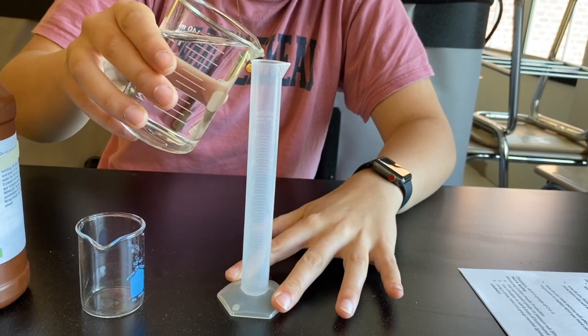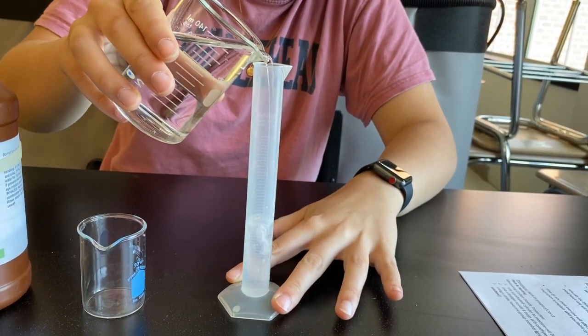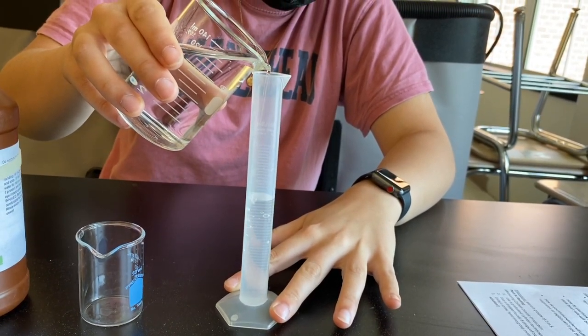Use a graduated cylinder to measure out 20 milliliters of tap water and pour it into a small beaker or a cup.